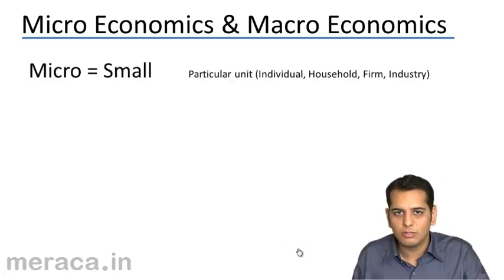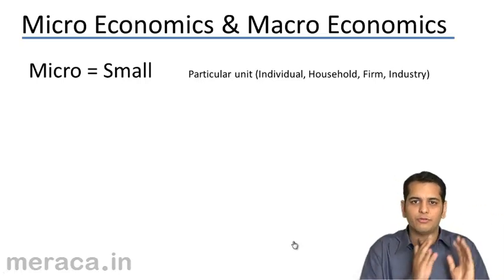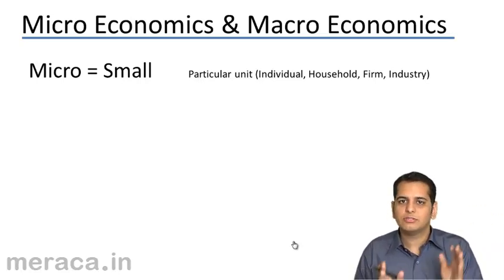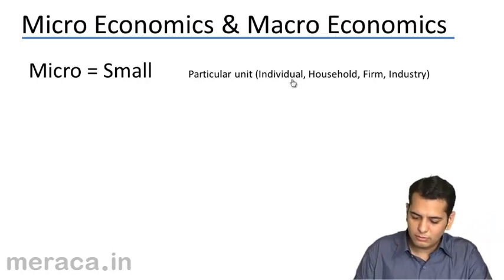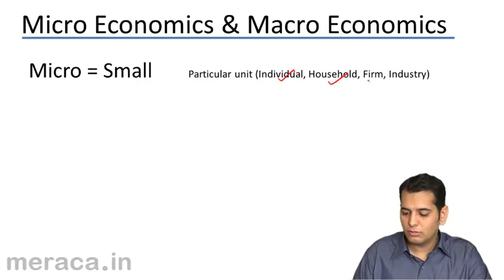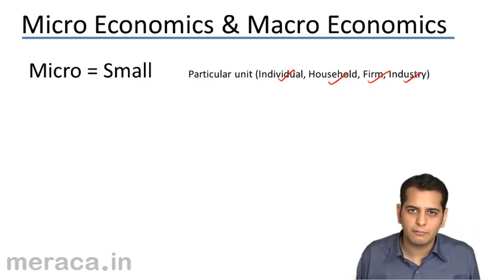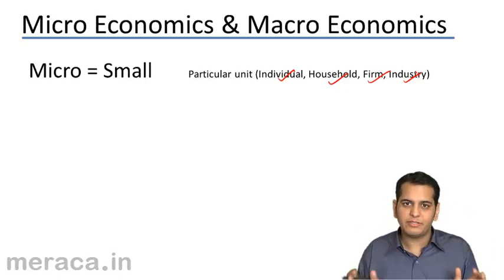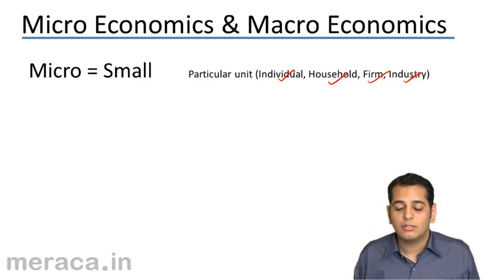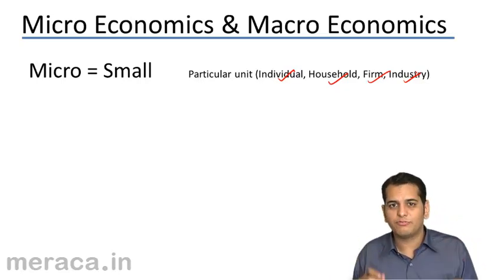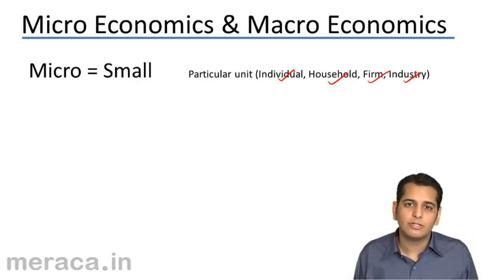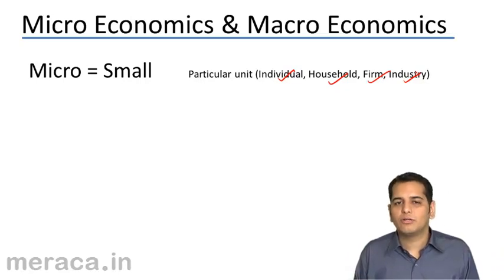Micro means small. So microeconomics is that part of economics which is related to a particular unit — small units like an individual, a household, a firm, that is a company, or an industry. These are smaller units of the society. Whatever economics they face around them is microeconomics: the income of an individual, the income of a family, the sales of a firm, the assets of a company, the assets of an industry. These are microeconomics concepts.